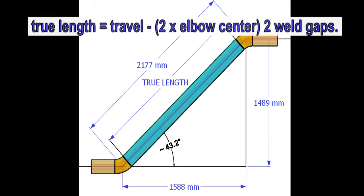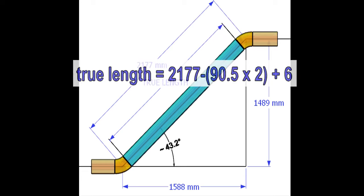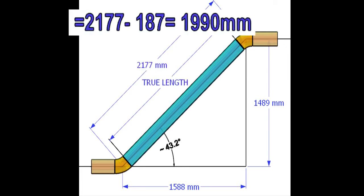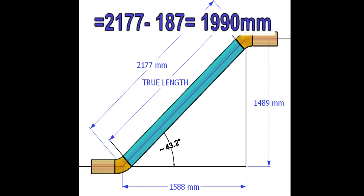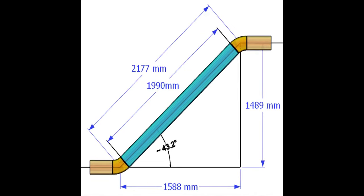The true length formula is the travel minus the sum of two elbow centers and two weld gaps. Here, I assumed one weld gap is 3 millimeters. The result of the calculation is 1990 millimeters, and that is the true length of the pipe.